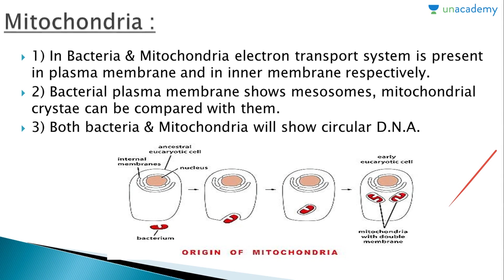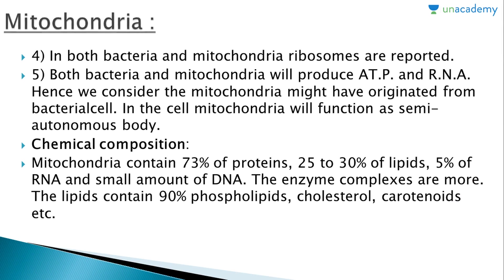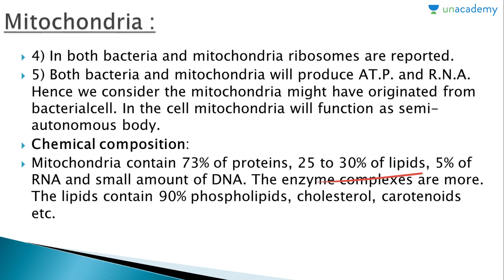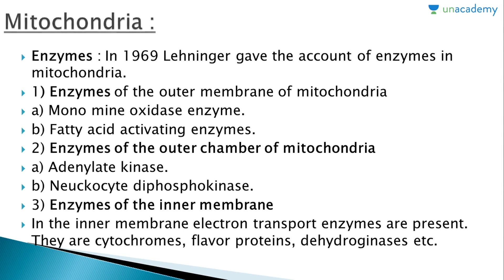Regarding chemical composition, mitochondria contain 73% proteins, 25–30% lipids, 5% RNA, and small amounts of DNA. The lipids contain 90% phospholipids, cholesterol, carotenoids, etc. In 1969, Lehninger gave an account of the enzymes in mitochondria.